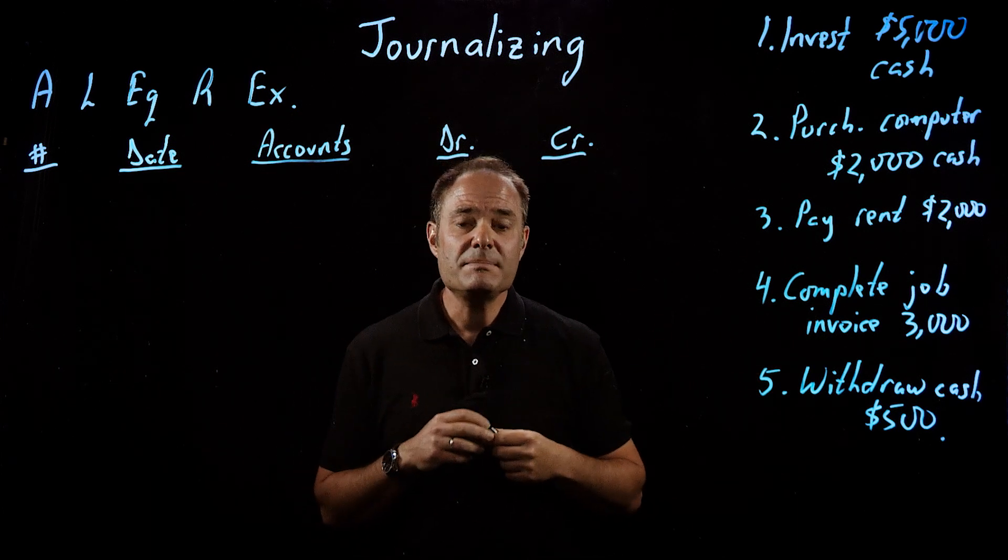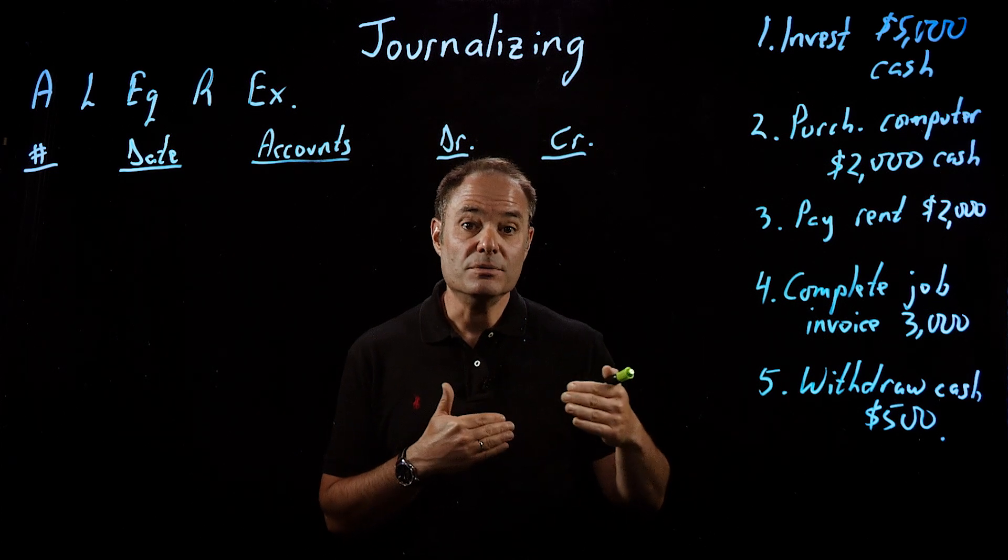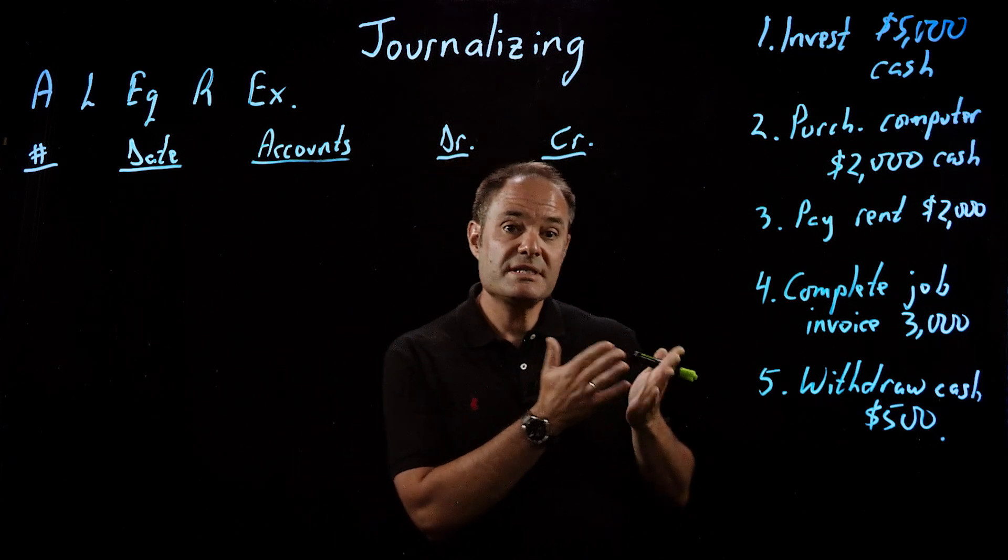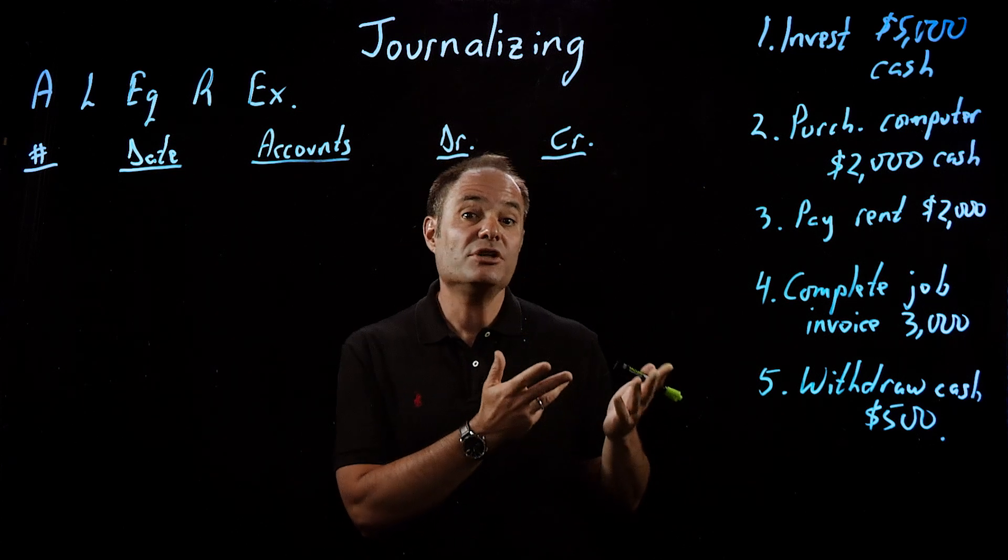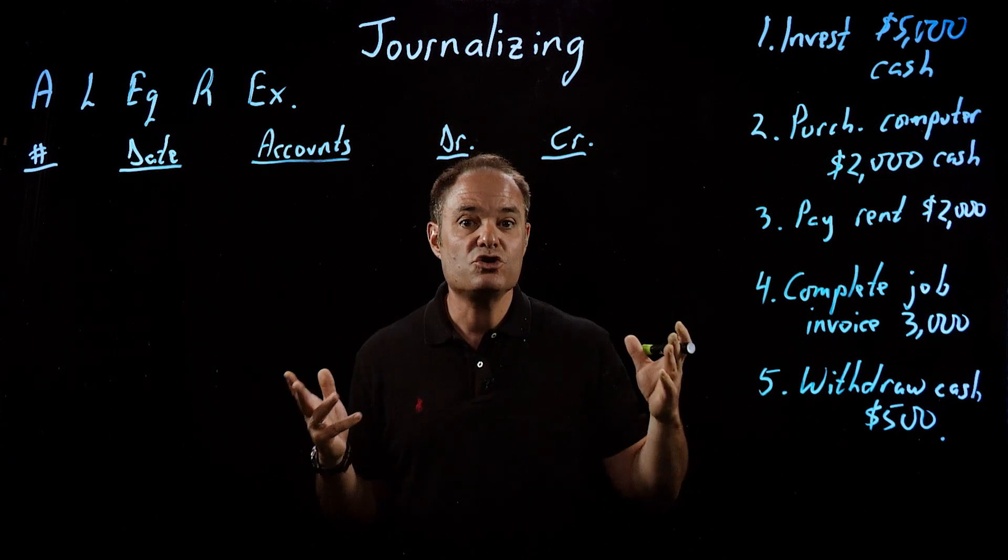We call it journalizing because all transactions in accounting are recorded in a book called the journal. The journal is sometimes referred to as the book of original entry, meaning that before we do anything with the data, we first have to record it in this journal.